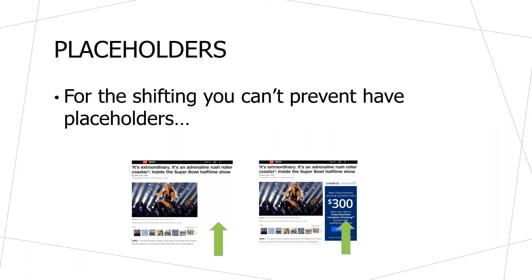If that isn't an option, another thing you can do is remove the shifting element altogether — though that isn't always possible if the element is an ad generating revenue. One of the best ways to fix CLS issues is to put in placeholders. In the example page we've been looking at, the ad on the side did not cause shifting because when the page initially loads, there's already space reserved for that ad. When the ad shows up, it simply fills in that empty space and doesn't cause anything else to shift. The same thing can be done for any element: create that empty space and then fill it, instead of allowing the element to load in and cause shifting.